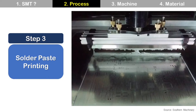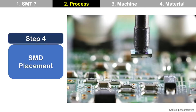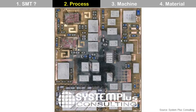Solder paste printing is a process to print solder paste on a package substrate using a stencil, which is fabricated based on the substrate design at step 2. SMD placement is to mount surface mount devices on the substrate, which already has solder paste on it. Solder paste holds the SMD temporarily before reflow. Typically, SMDs are chip resistors, inductors, and capacitors. But flip chip die uses flux, and wire bonding die uses die attach adhesive instead of solder paste, if the SiP has those dies.